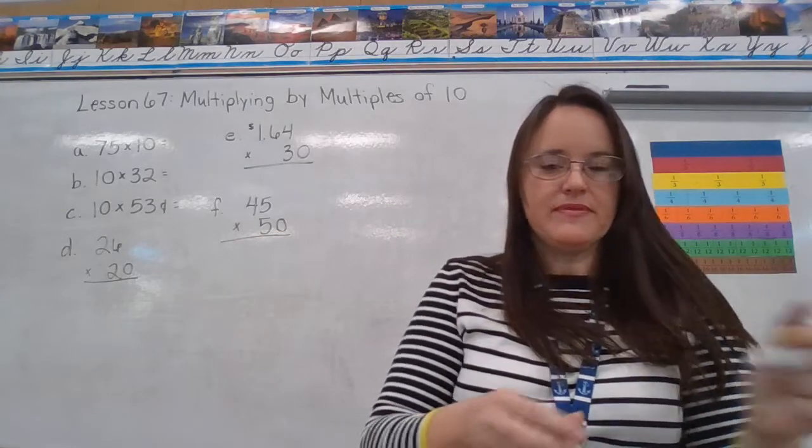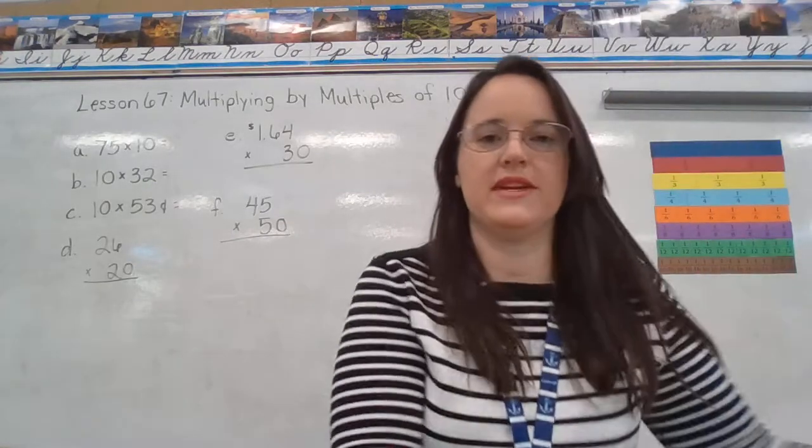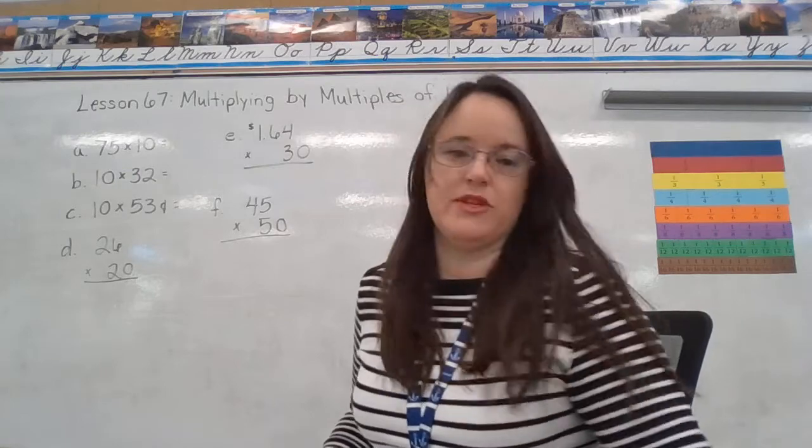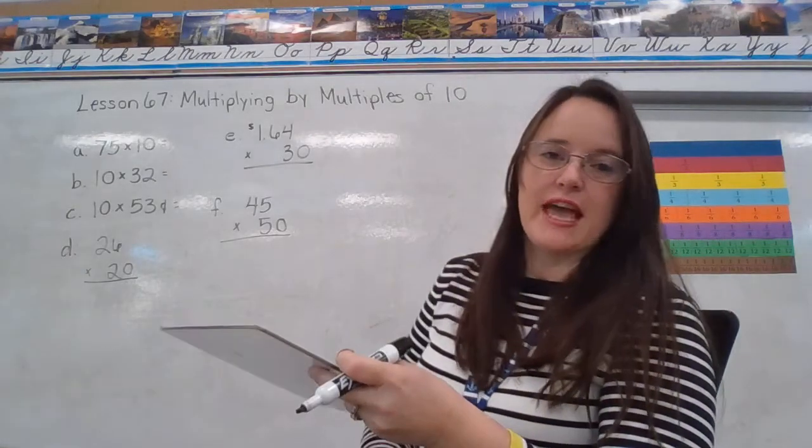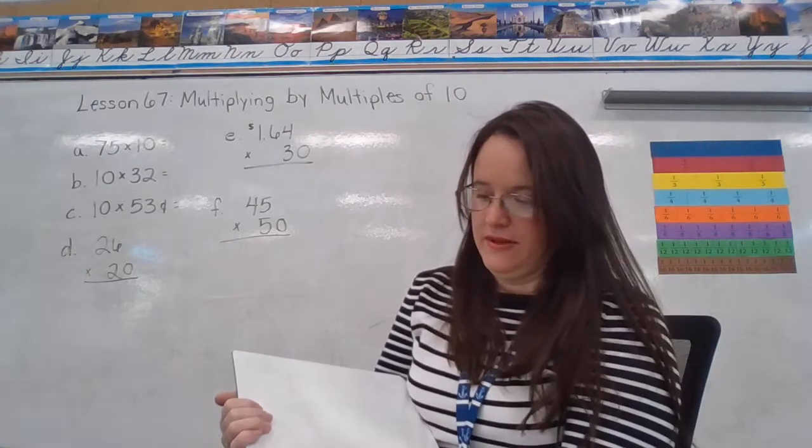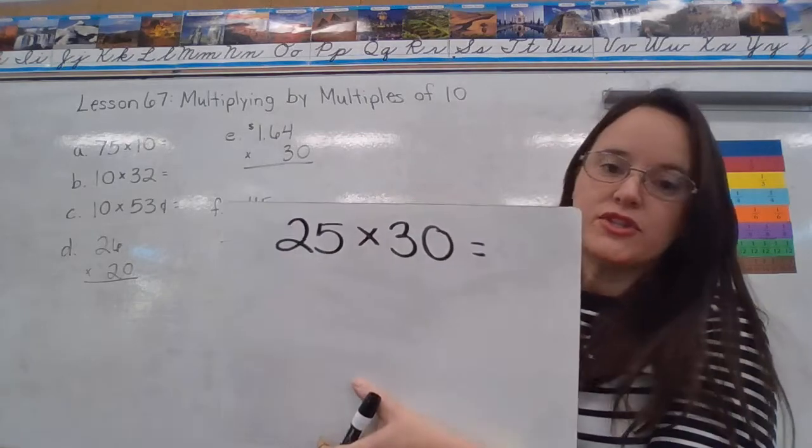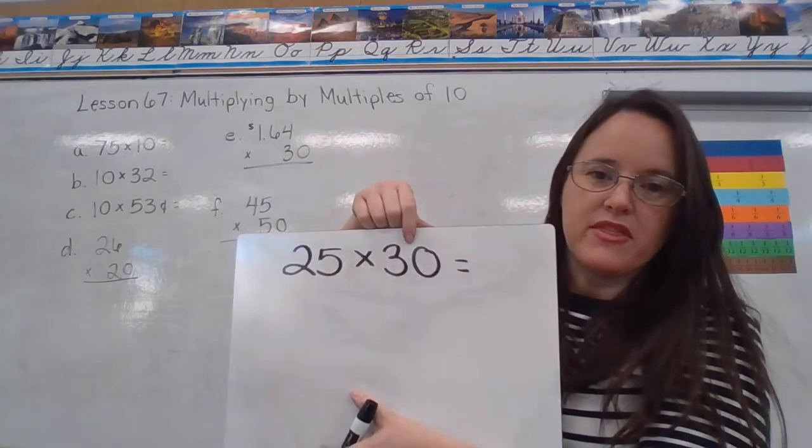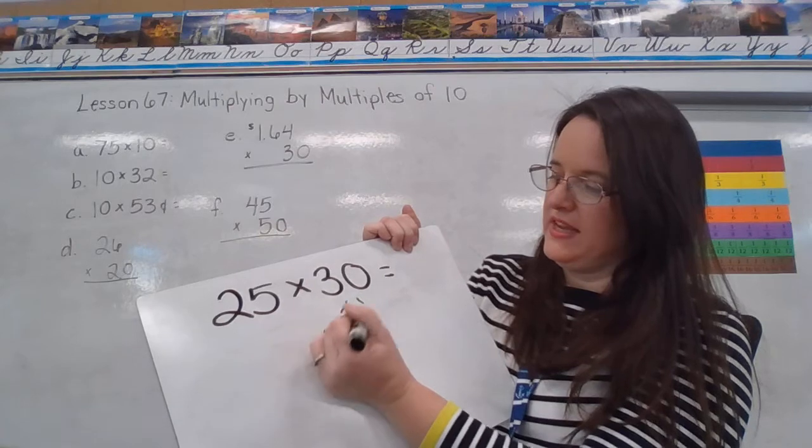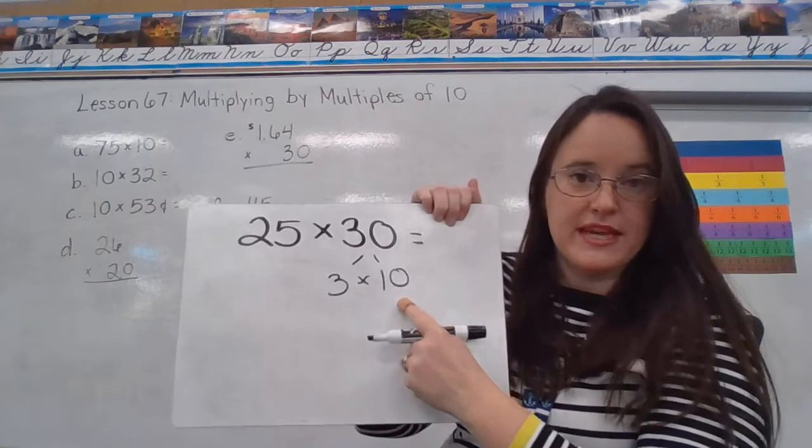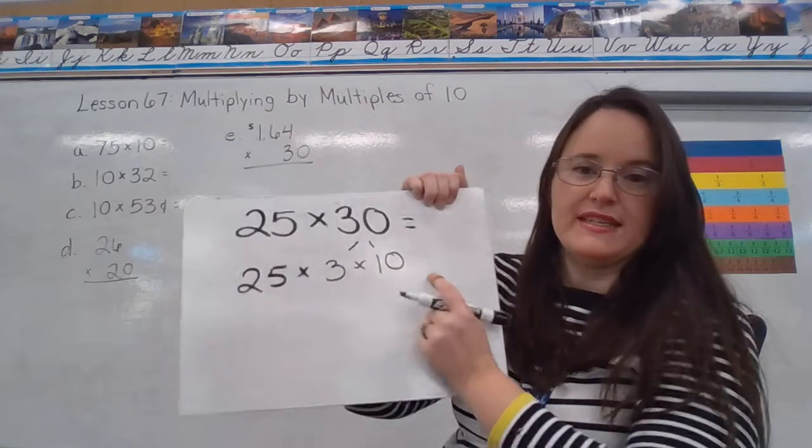So today's lesson is similar, except we're going to change it up on you a little bit. In our first example, we're multiplying 25 times 30. So let me write it horizontally. This is how they have it in the book. So what you want to think about is you want to split up the 30 into 3 tens. So really, we can look at 30 as 3 times 10, because 3 times 10 is equal to 30, right? So then what we're doing is 25 times 3 times 10.